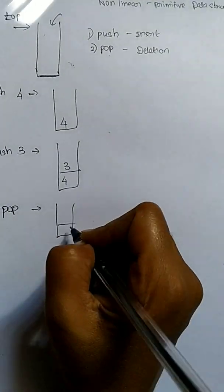Last in, first out means element 3 was inserted at the last, so it was taken out first. You can also say first in, last out — element 4 is inserted first, but it is taken out last. You can call the stack as last in, first out or first in, last out. The operations in the stack are push and pop, done only from one end.